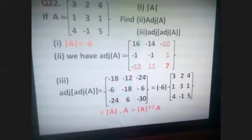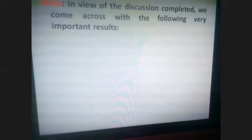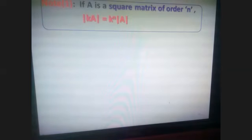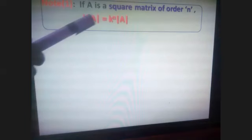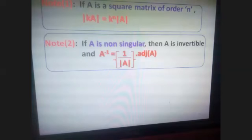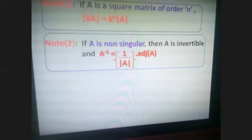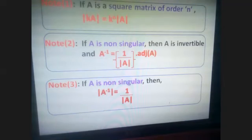Now let us go through some very important results. First: if A is a square matrix of order n, then determinant of kA is k raised to n times determinant of A. If it is 3×3, k cubed will come; if it is 4×4, k raised to 4 will come. Further, if A is non-singular, A is invertible and A inverse equals one by determinant of A into adjoint of A. You have to remember this formula.